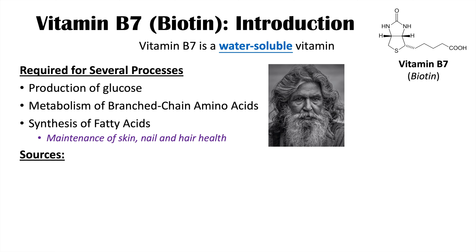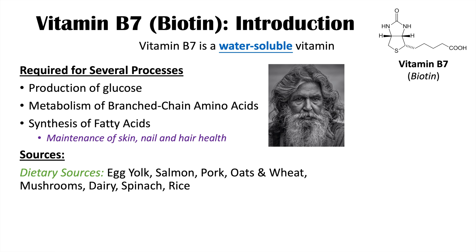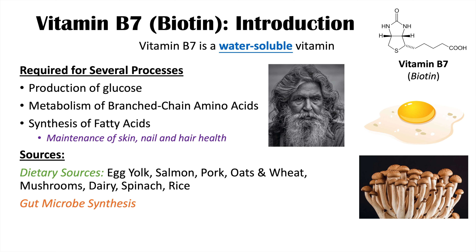Biotin comes from a variety of sources. Dietary sources include egg yolk, salmon, pork, oats, wheat, mushrooms, dairy, spinach, and rice. Biotin can also come from gut microbe synthesis as well.